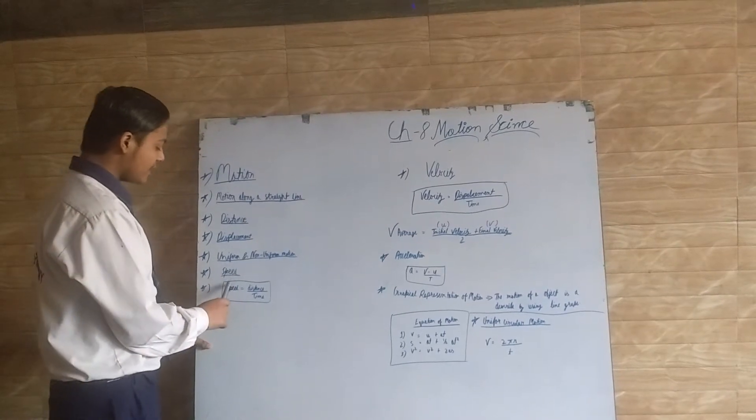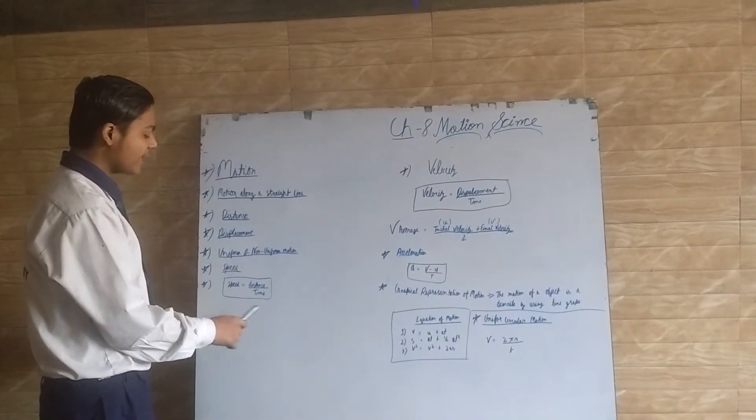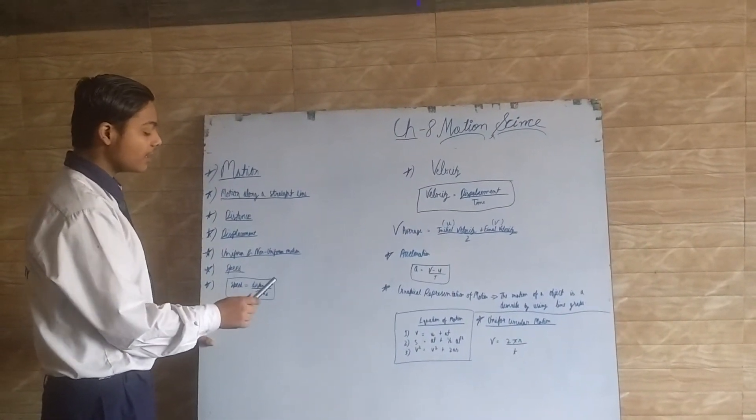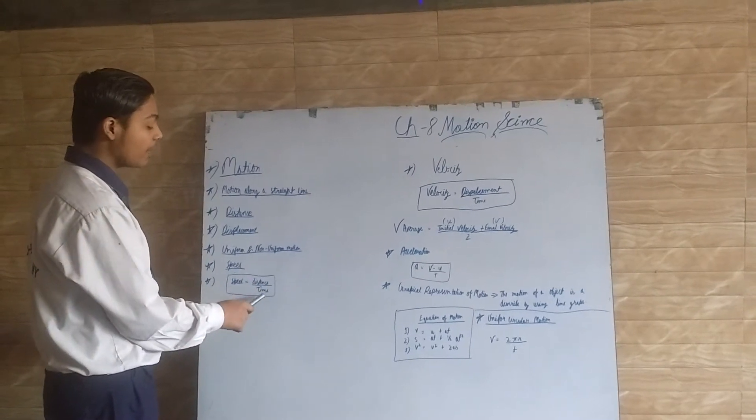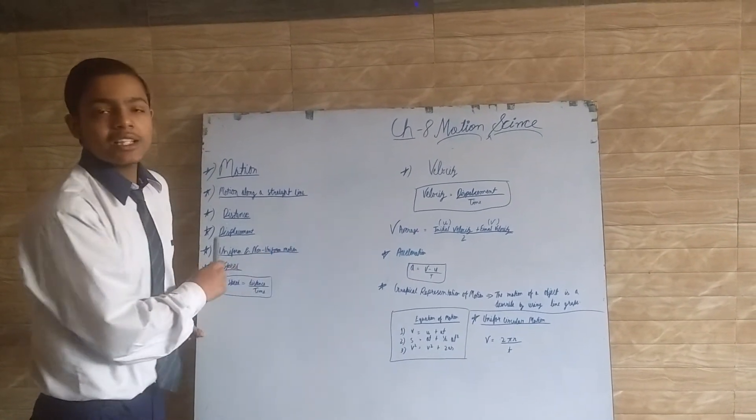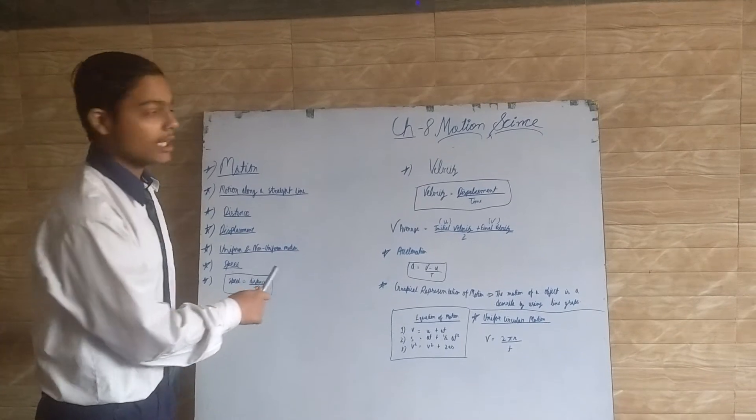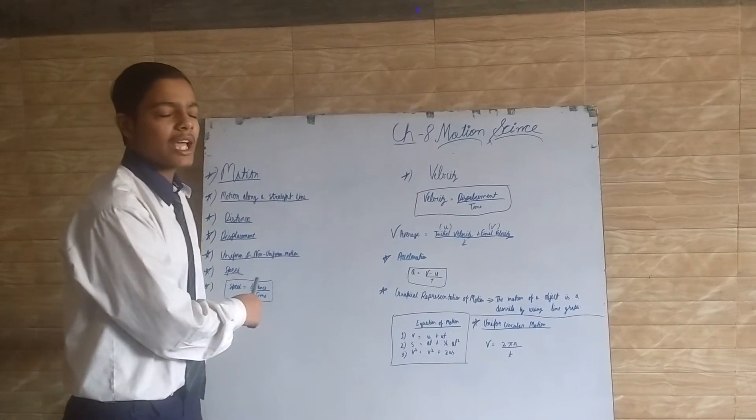Speed is defined as the distance traveled per unit time. Its SI unit is meter per second, and it is a scalar quantity.